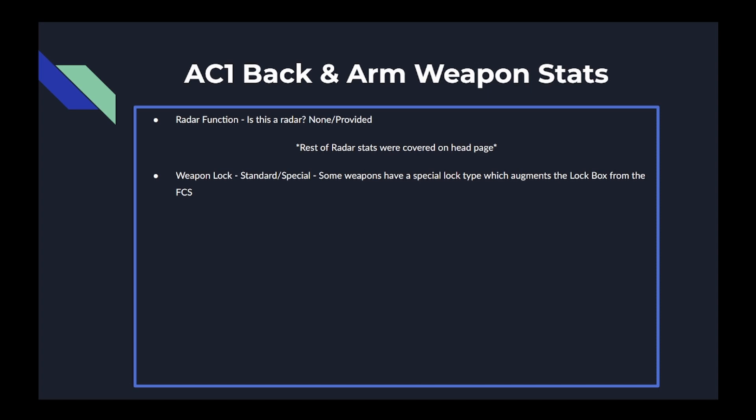The weapon lock stat is either standard or special. Standard follows the regular lock from the FCS, but some weapons have a special lock type which augments the lock box from the FCS — usually as a balance so you can't pair a high-powered cannon or arm laser with a wide-shallow lock box to make it impossible to dodge.